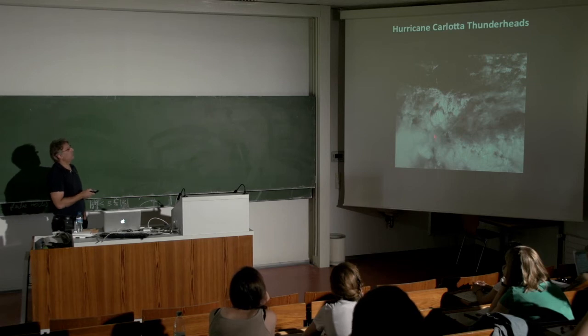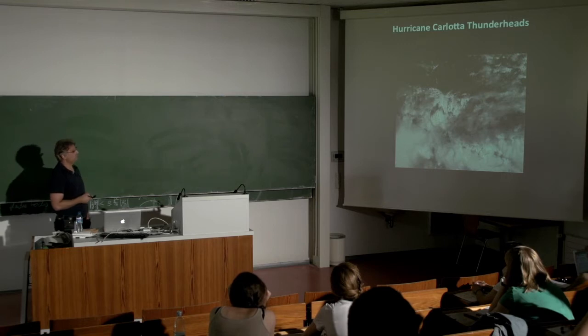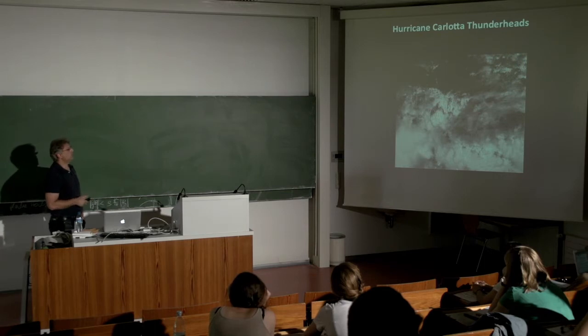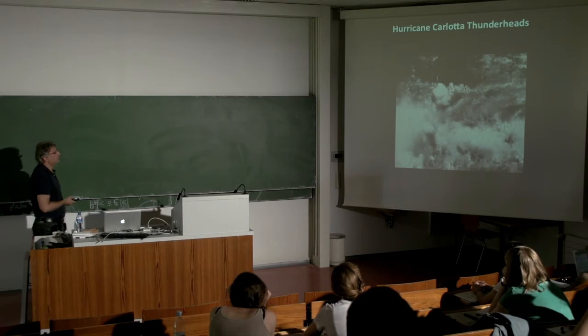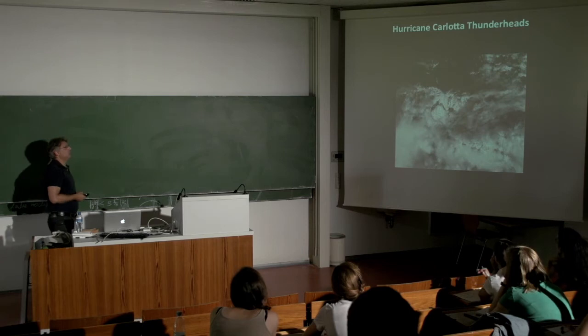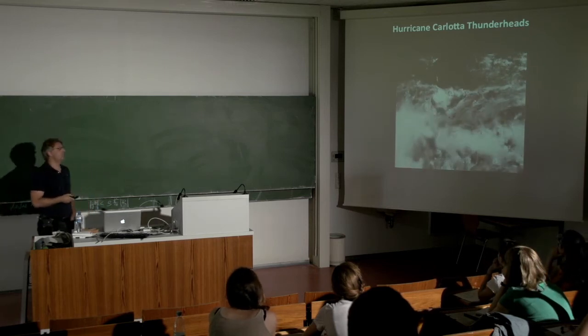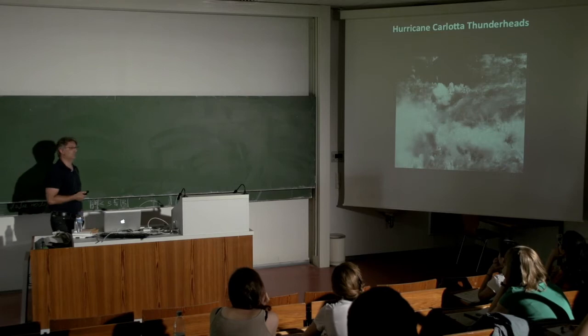Another example is thunderheads from Hurricane Carlotta. This animation shows you how different the world looks from nine different angles. This is the forward-looking 70-degree view, where you basically see the shadow side of the clouds. As you move through the nine cameras, you see the top, and then from the backward-looking direction you see the sunny side of the clouds. It gives you an appreciation of how three-dimensional clouds really are.